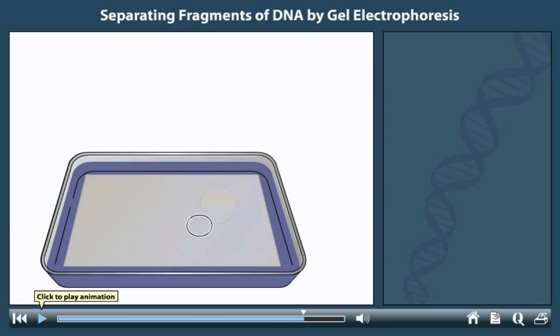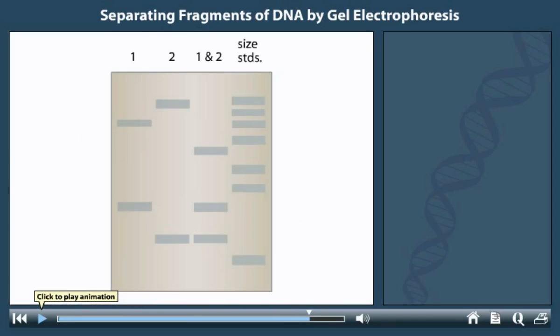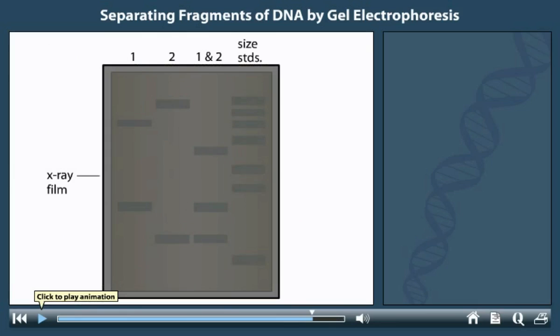The filter is washed to remove any unhybridized probe. A piece of X-ray film is placed over the filter. The radioactive probe exposes the film, revealing the locations of hybridization.